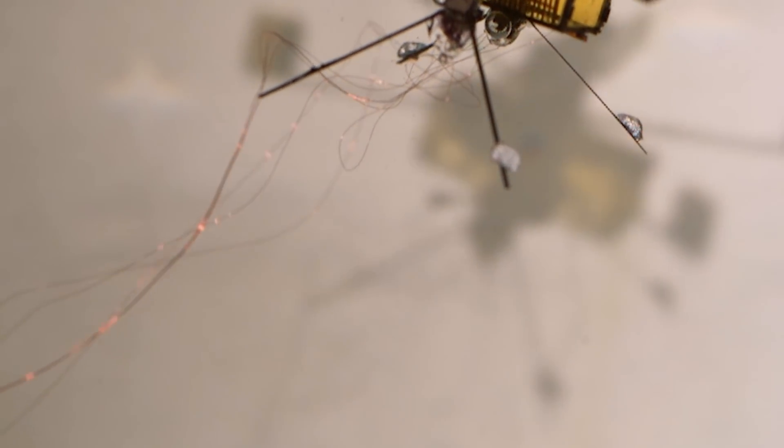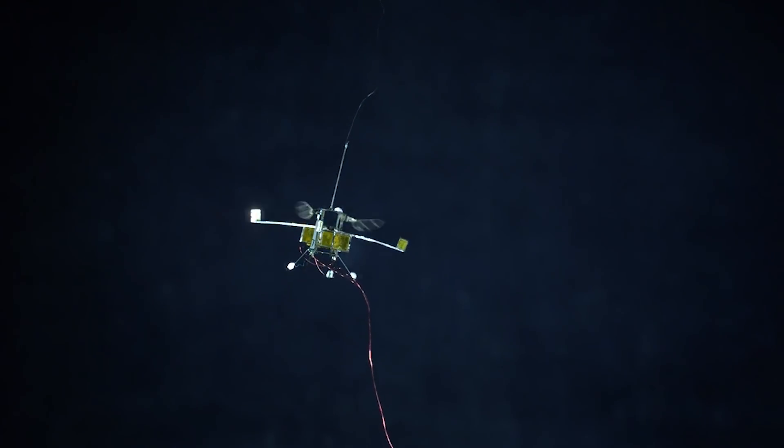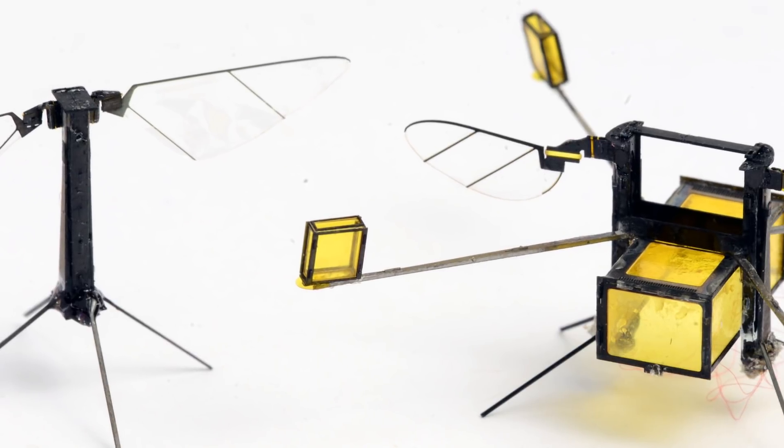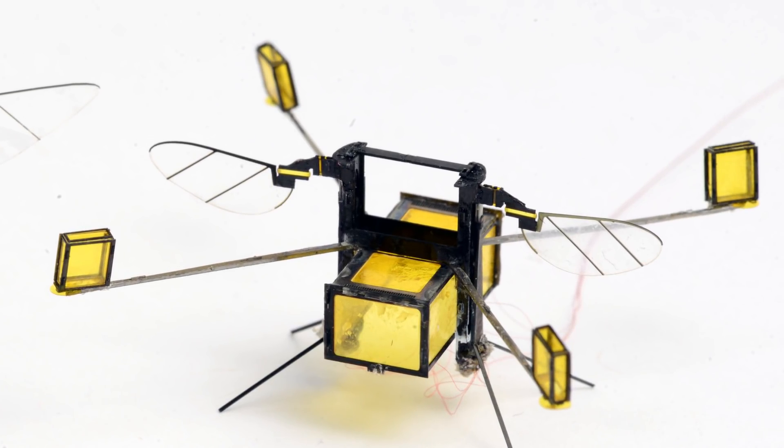Researchers have built a small robot that can move as well underwater as it can in the air. The small machine was adapted from an earlier design that could only fly. But in order to make it swim, they had to go back to the drawing board.